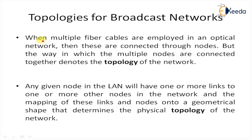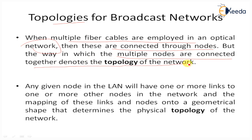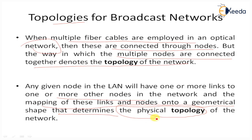Now, starting with topology — what is topology in this network? Multiple fiber cables are employed in the optical network for different communications, connected through nodes. The way in which multiple nodes are connected together denotes the topology of the network, or the physical topology. The mapping of links and nodes into a geographical shape determines the physical topology of the network.